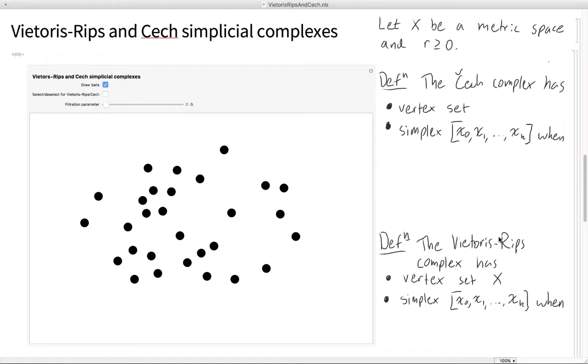These complexes are two of the most common complexes in applied topology, and there's a lot of theoretical work being done in them as well. In particular, my research focuses a lot on the theory behind Vietoris-Rips and Čech simplicial complexes.